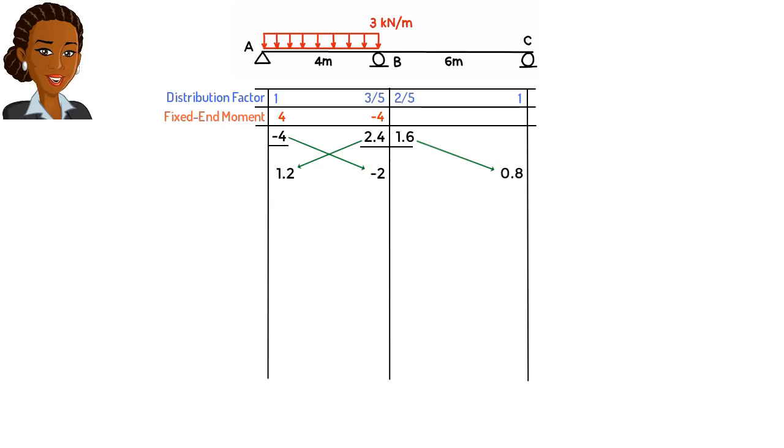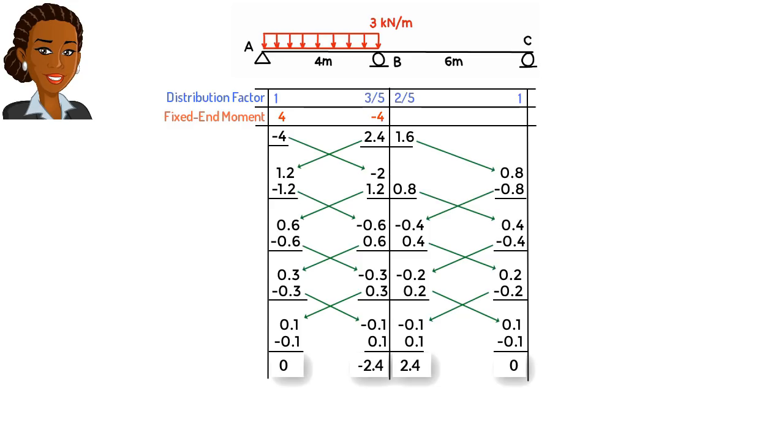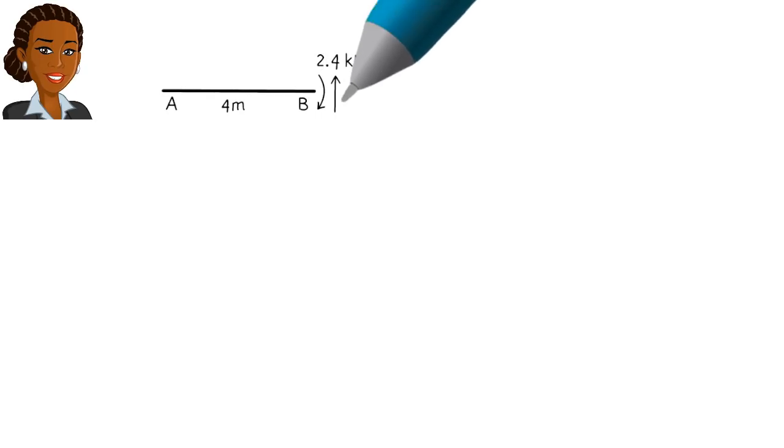Then we balance all three joints and add the carryover moments to the table. We balance the joints and carry over the moments again. After a few more iterations, it becomes clear that we have reached the end of the process. Now, add up the column values to determine the member end moments. We then apply the equilibrium equations to each segment to complete the analysis.